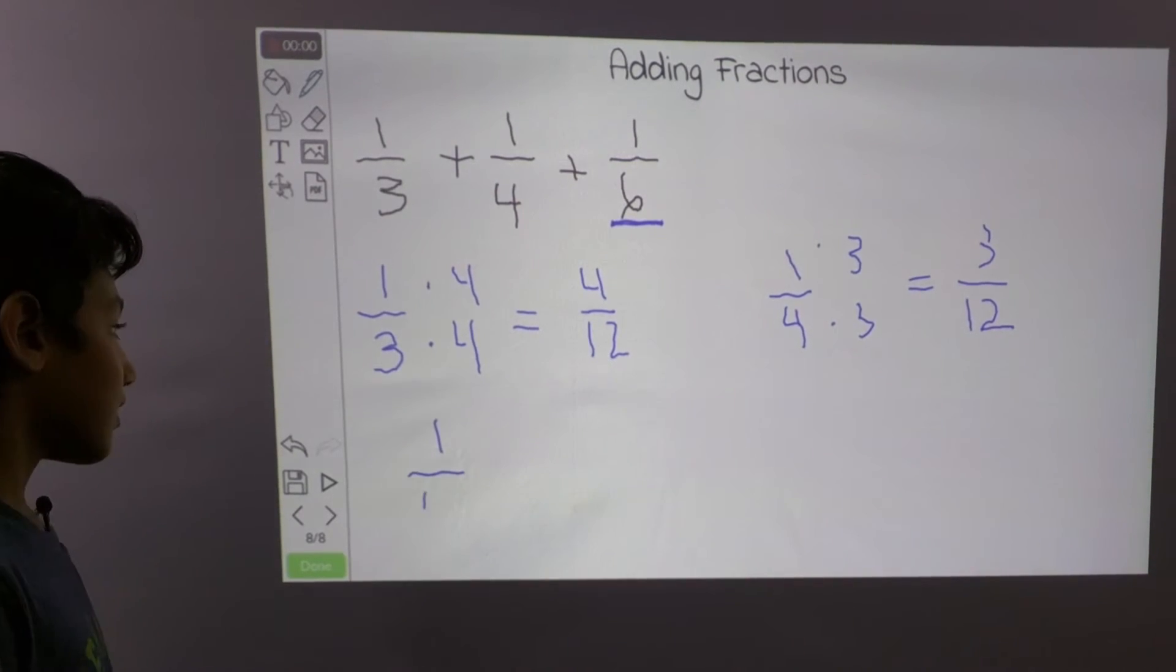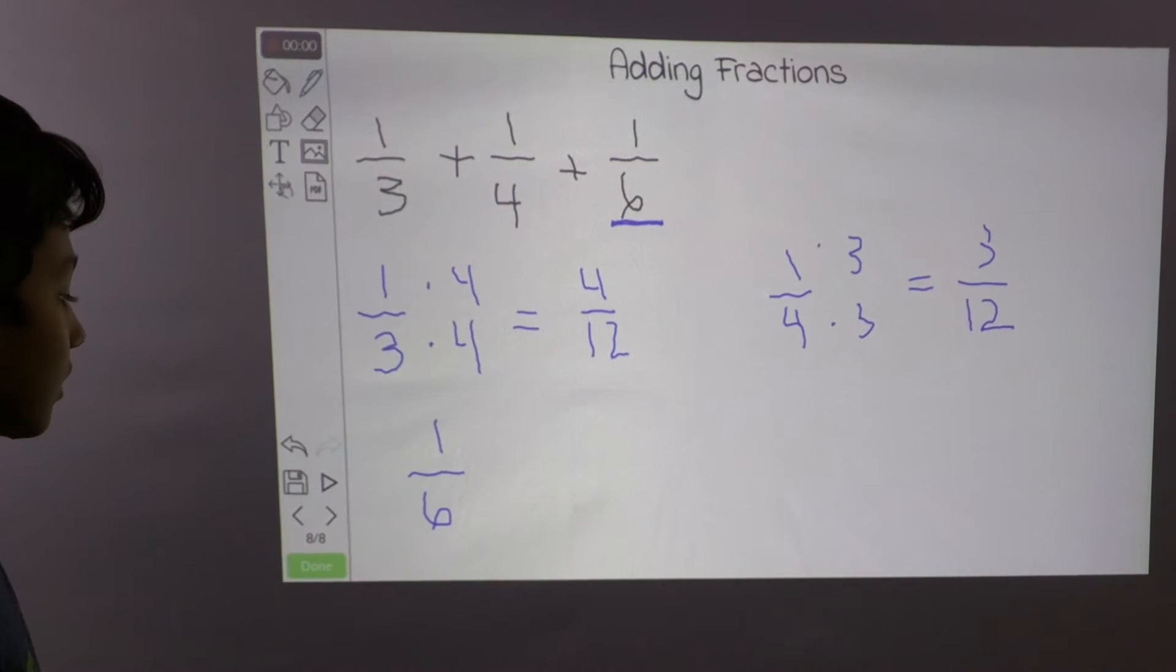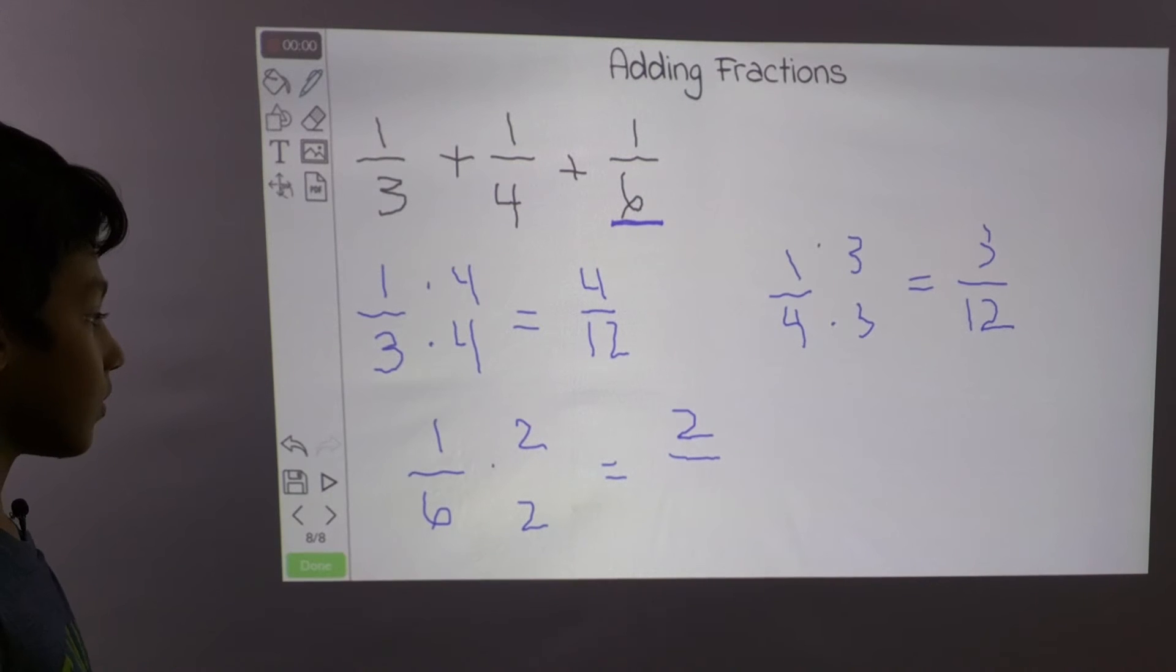We know that 6 times 2 is 12, so times 2 times 2, and that equals 2 over 12.